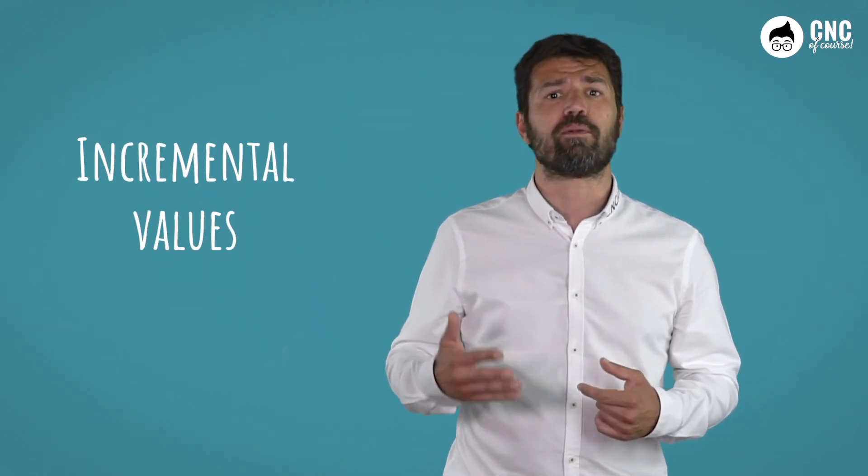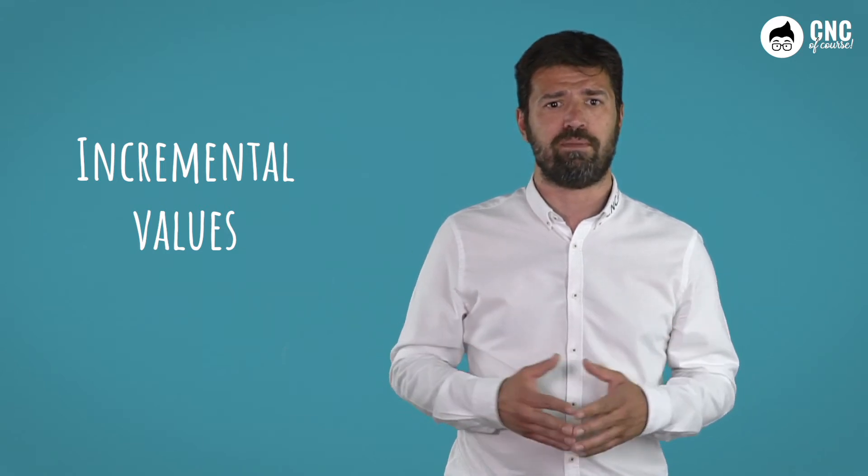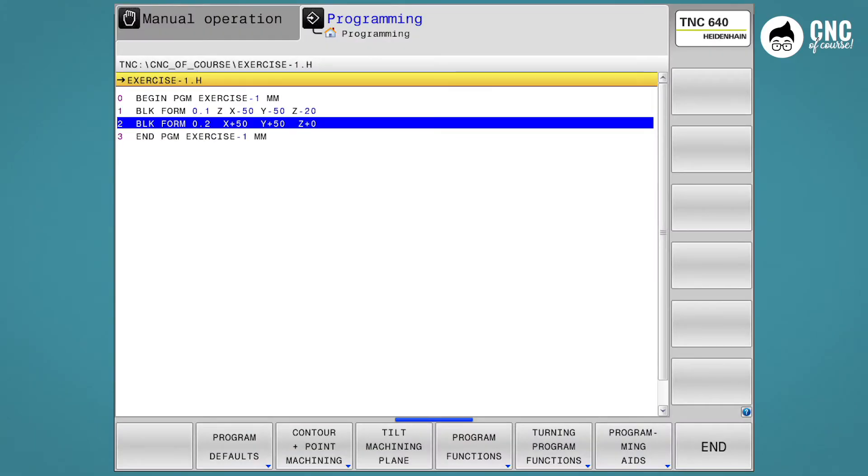Once the limits have been set in the negative direction, the dialogs continue with the request for maximal points. The input method is the same, but in addition you have the option of entering incremental values, which will then be interpreted as the distance to the minimal points. So you can enter X plus 50, Y plus 50, and Z plus 0 if you want to enter absolute values. Or if you want to use incremental, you can enter the orange I key on the numeric keypad and define an I X plus 100, I Y plus 100, and I Z plus 20.